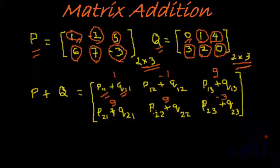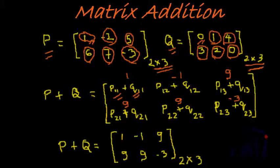If you write all these, we will get the result matrix which is the addition of P plus Q. So the resultant matrix P plus Q, by writing down the elements arrived at by adding the individual elements, we get 1, minus 1, 9, 9, 9, and minus 3. This is the result.